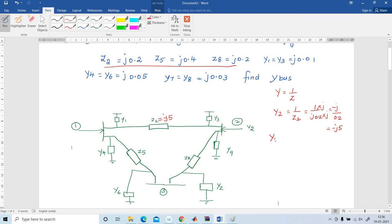In the similar manner I am going to find out Y5. Y5 is 1 by Z5, 1 by j0.4. What is 10 by 4? That is equal to 2.5, minus j2.5. So Y5 is minus j2.5.